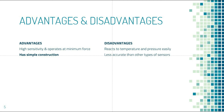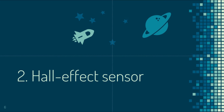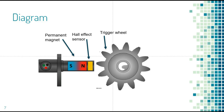Now let's talk about the Hall effect sensor. This is the diagram of the Hall effect sensor. You have a permanent magnet and a Hall effect sensor with a trigger wheel. If you move the trigger wheel, the magnet detects a change in magnetic flux or movement — but this works best with metal objects. The Hall effect relates to the phenomenon of change in magnetic flux.